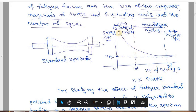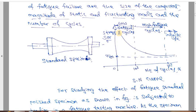A graph is drawn with bending stress on the y-axis and number of cycles on the x-axis. Since one specimen can only be used for one type of loading before it fails, I have to load another specimen for a different load level to get multiple data points. By failing many specimens, I can draw a smooth curve — this curve is named the famous S-N curve, where S is stress and N is number of cycles.